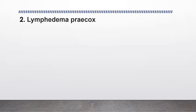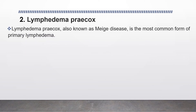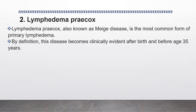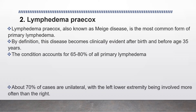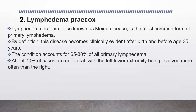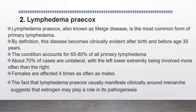The second type of primary lymphedema is lymphedema praecox, also known as Meige disease, and it is the most common form of primary lymphedema. By definition, this disease becomes clinically evident after birth and before age 35 years, accounting for 65–80% of all primary lymphedema cases. Although 70% of cases are unilateral — with the left lower extremity involved more often than the right — females are affected four times as often as males. The fact that lymphedema praecox usually manifests clinically around menarche suggests that estrogen may play a role in its pathogenesis.